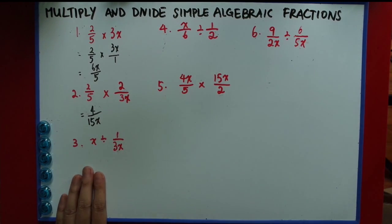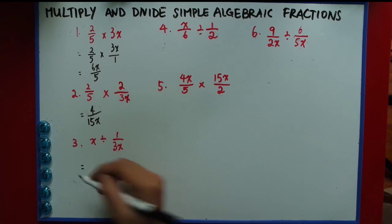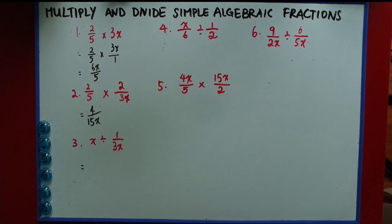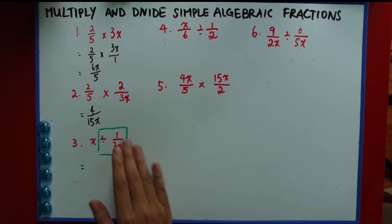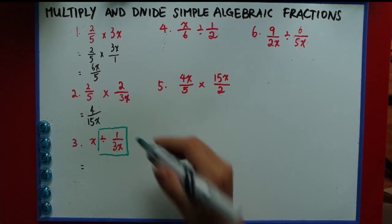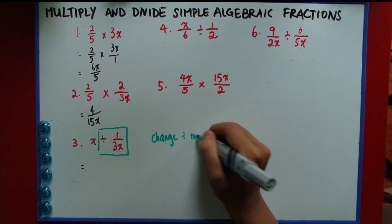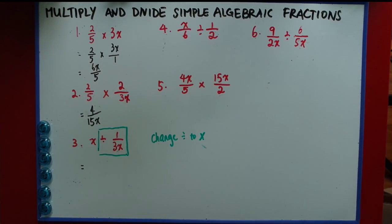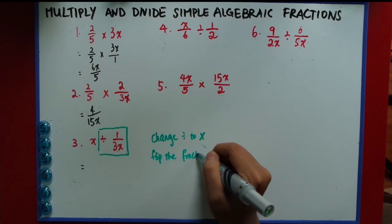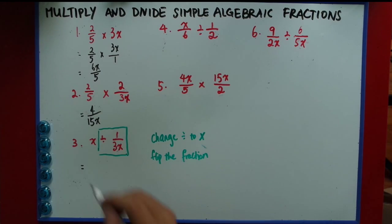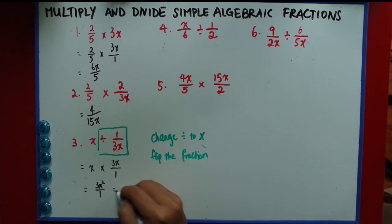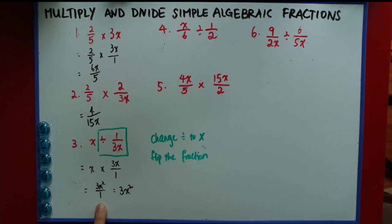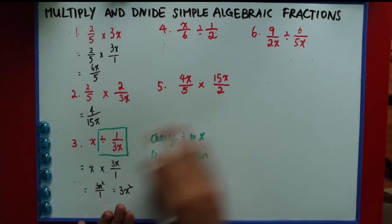Now we do number 3, where I'm going to introduce division. When you see a division sign, there's something you must follow. First, identify the term with the division sign attached to it — the sign is always before the actual term. All you have to do is: first, change the sign from divide to times; then flip the fraction. Follow these two steps: change the sign, flip the fraction. So it becomes x times 3x, which is 3x squared over 1, which is simply 3x squared. In the final answer, you don't have to write the 1 at the bottom. So be careful with division — you have to flip the fraction.